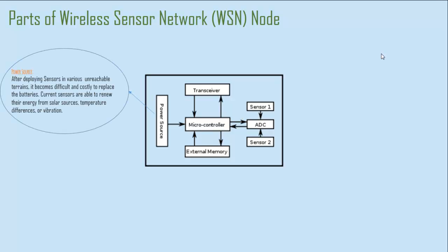The power source — to understand it, we need to understand why a battery is important. A battery is critical because the hardware is busy all the time gathering information. When sensors are deployed in a remote or difficult-to-reach location, we find methods to prolong the battery lifespan, such as allowing sensors to renew energy from solar sources, temperature differences, or vibration.